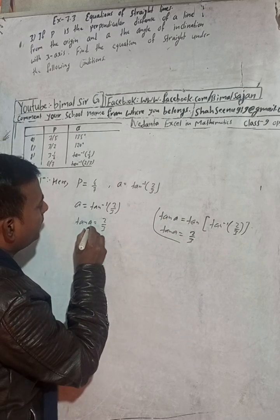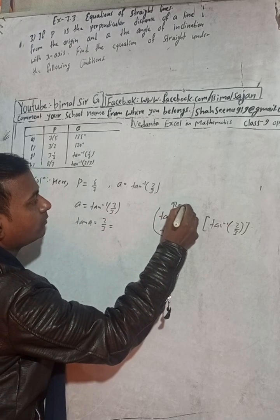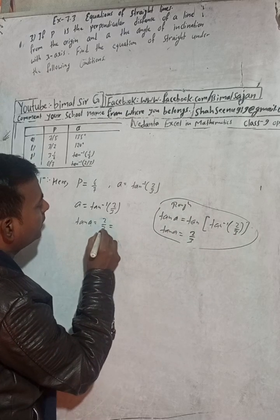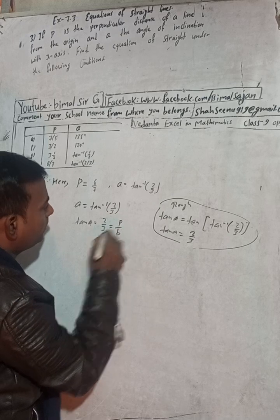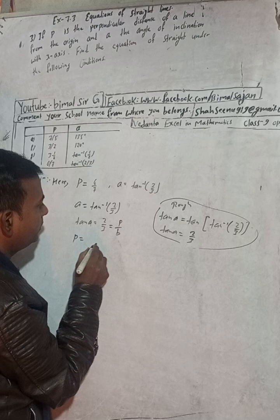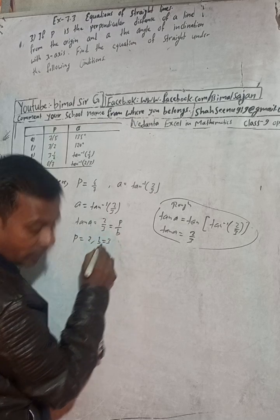Now after finding tan alpha, you can write here what this is row of. Now this is 2/3, so tan alpha value is p by b. That means here p is equal to 2 and b is equal to 3.